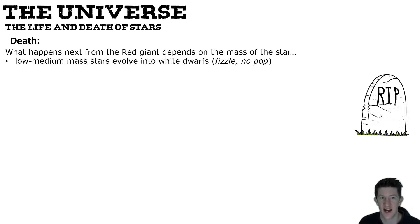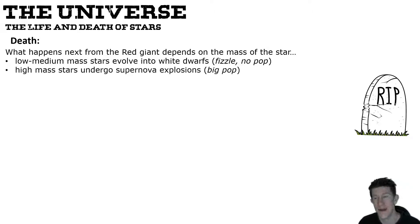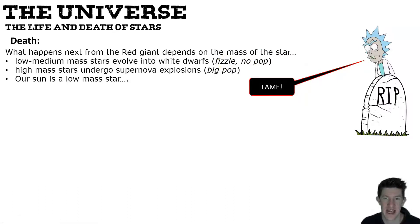A low to medium mass star evolves into a white dwarf — a very hot core left behind that gradually cools down. It's basically a fizzle, no pop: no spectacular display beyond the red giant phase, just slowly drifting off into the universe. A high mass star will undergo a supernova explosion — that's the big pop, the firework display. Our sun is a low mass star, so it will fizzle out after the red giant phase into a white dwarf.